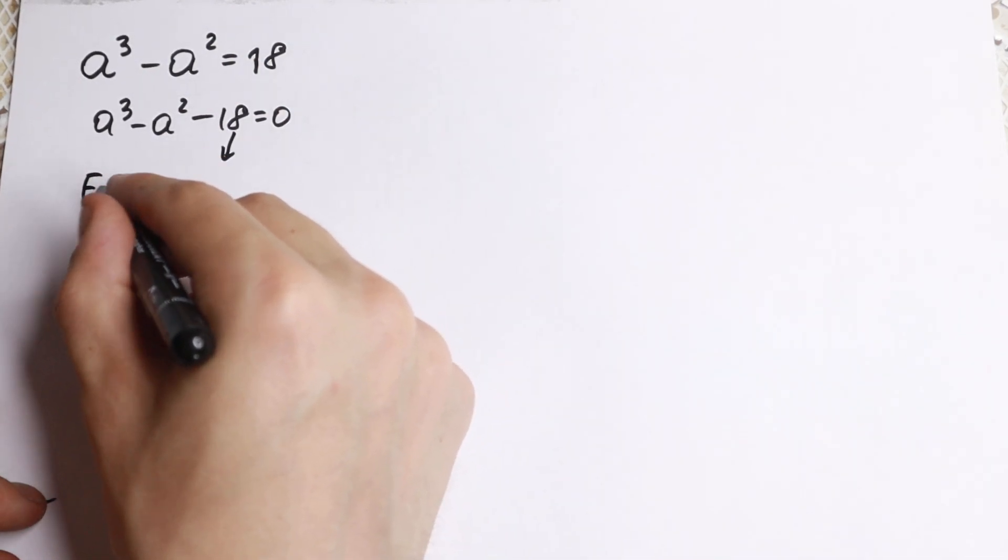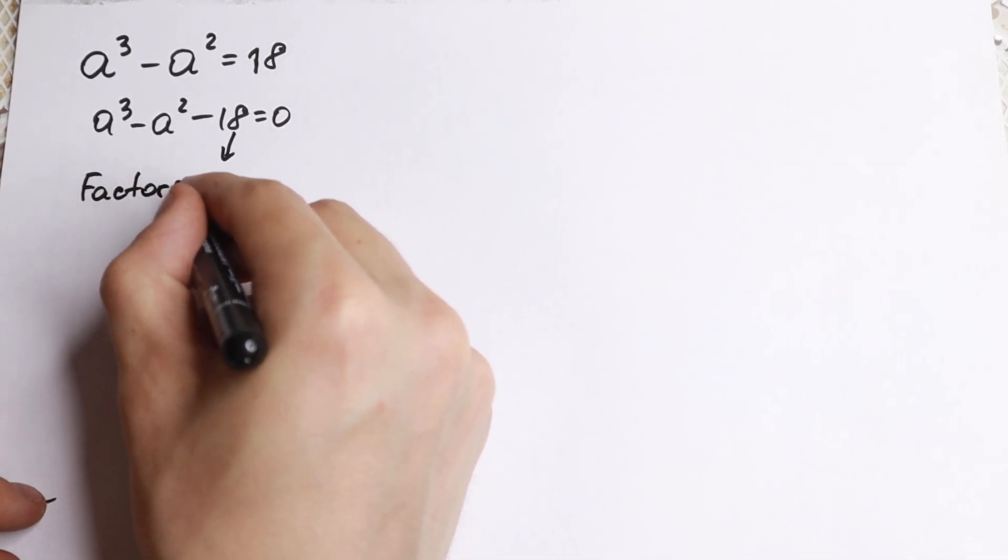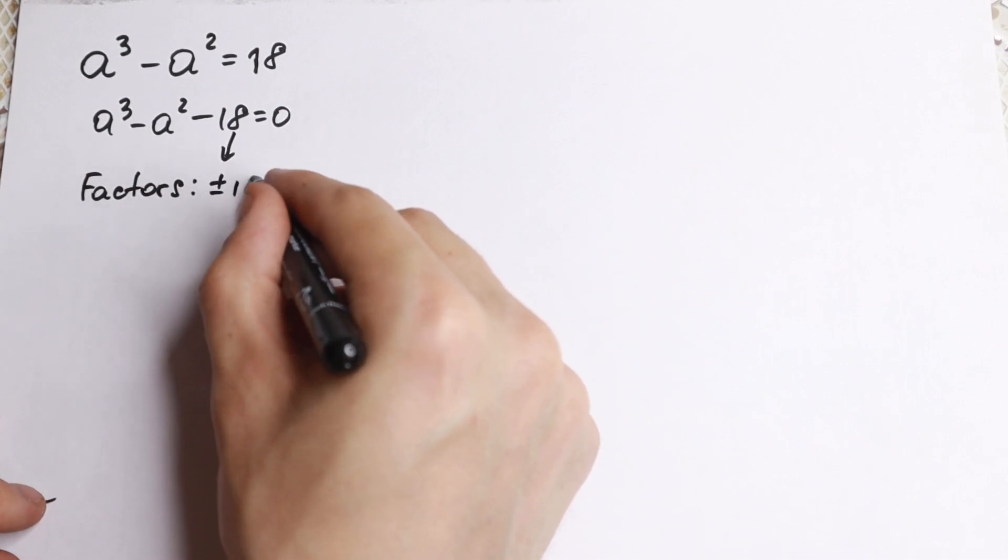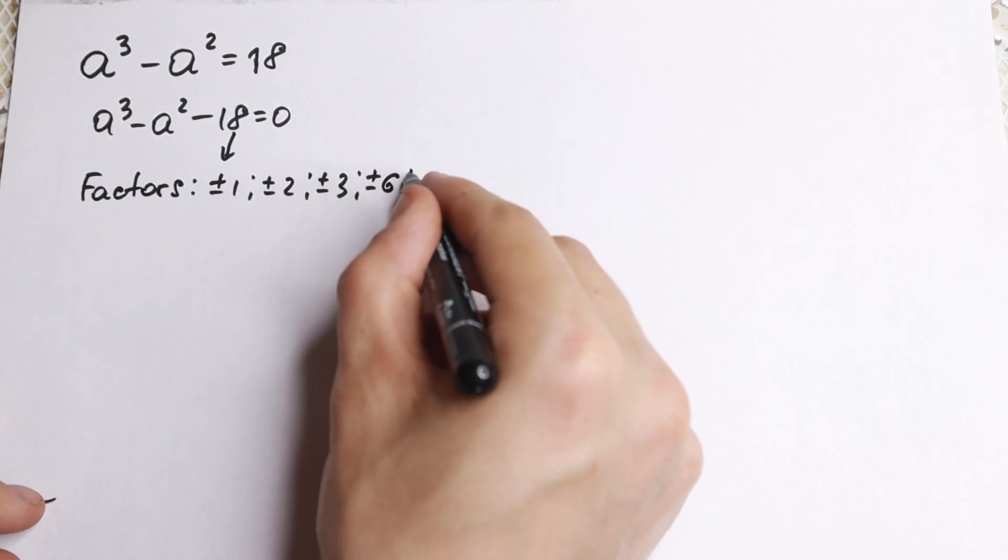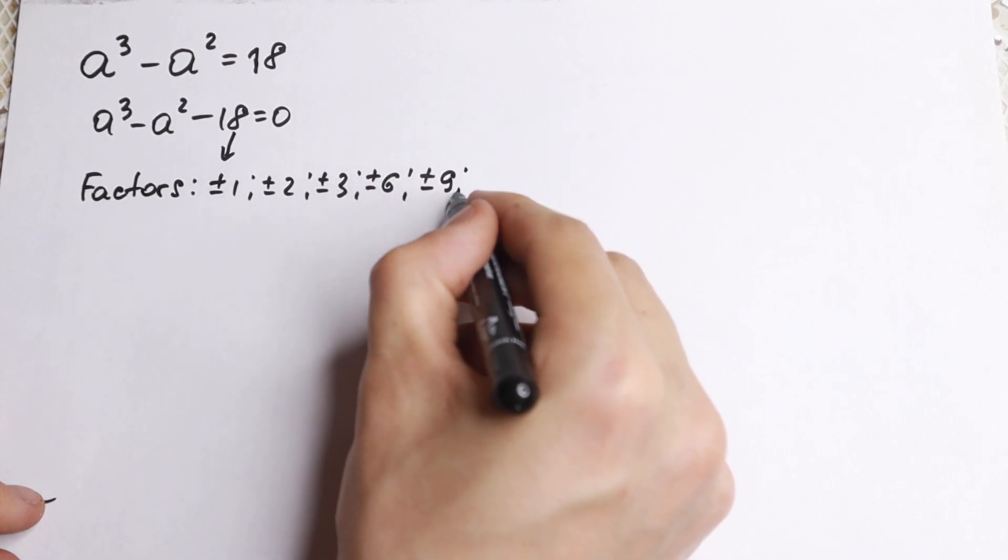If you find the factors of 18 real quick, what factors do we know? We know ±1, ±2, ±3, ±6, ±9, and ±18.